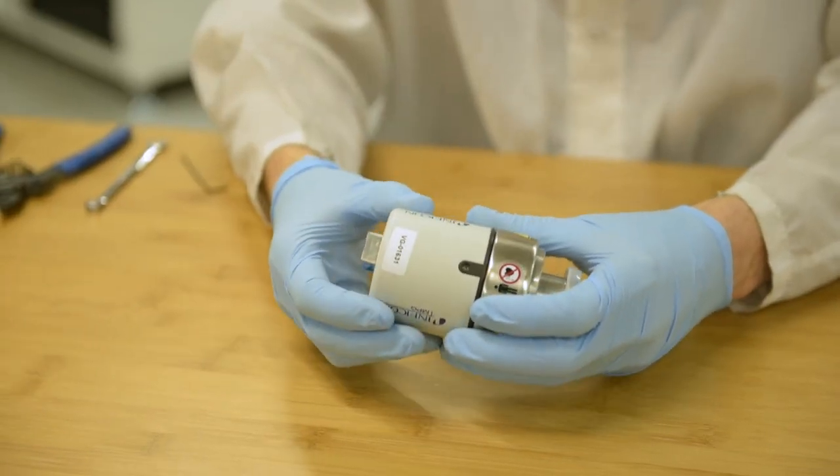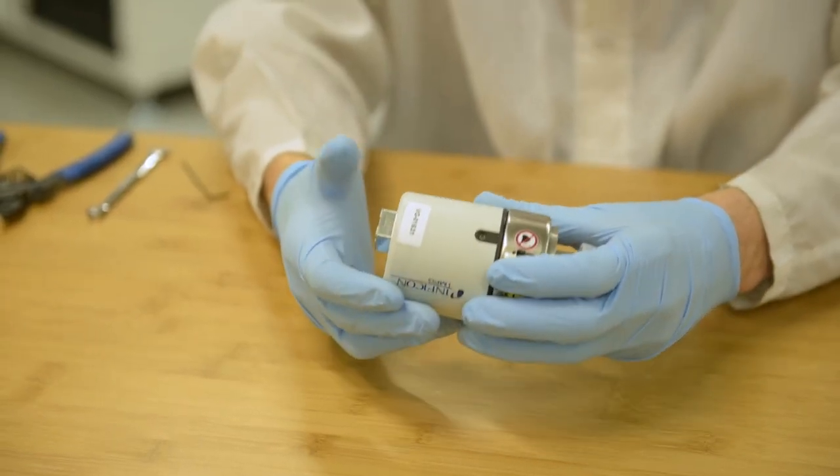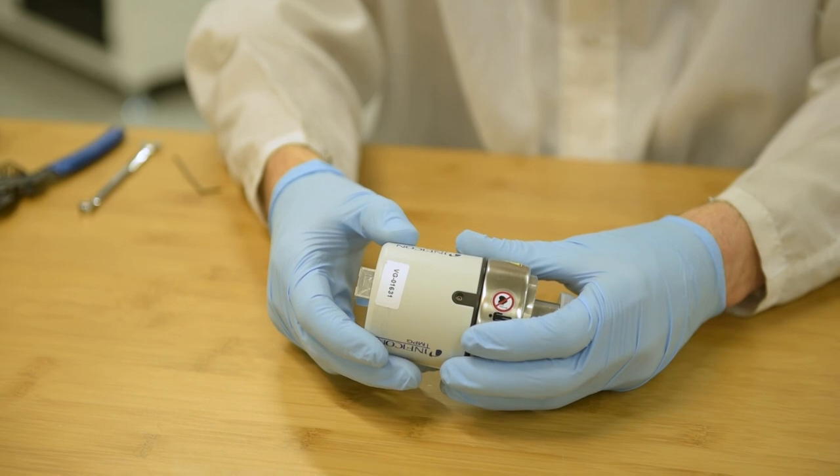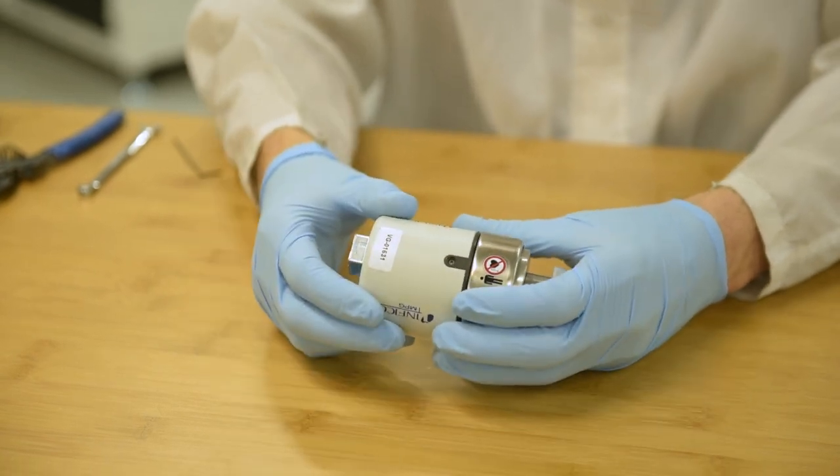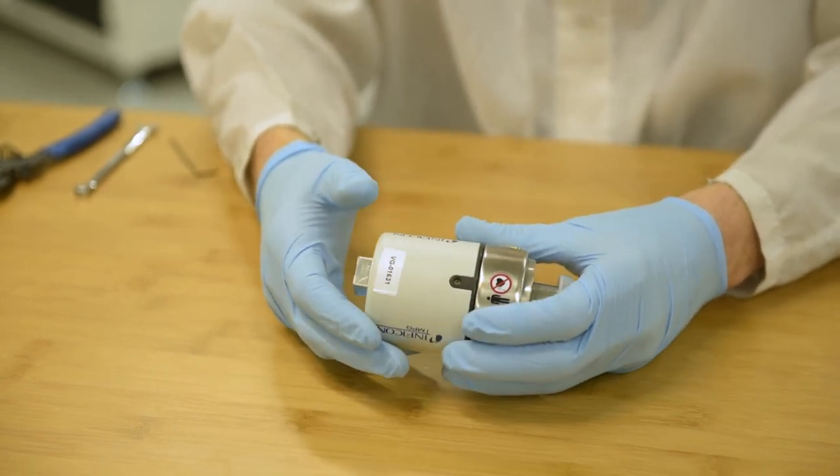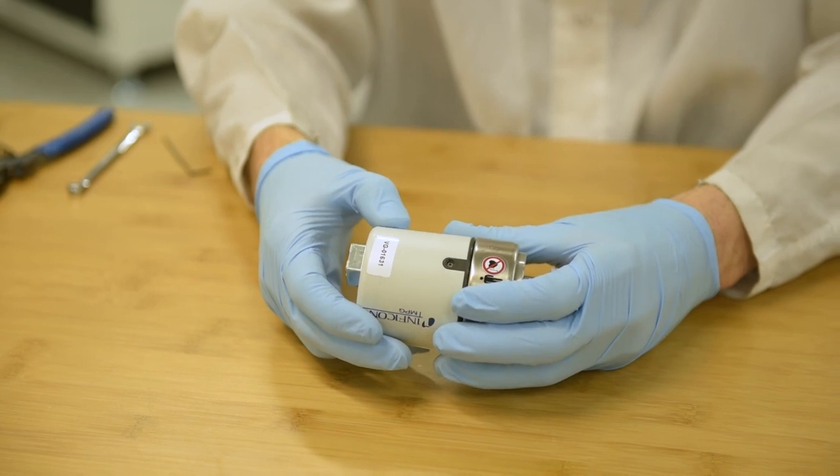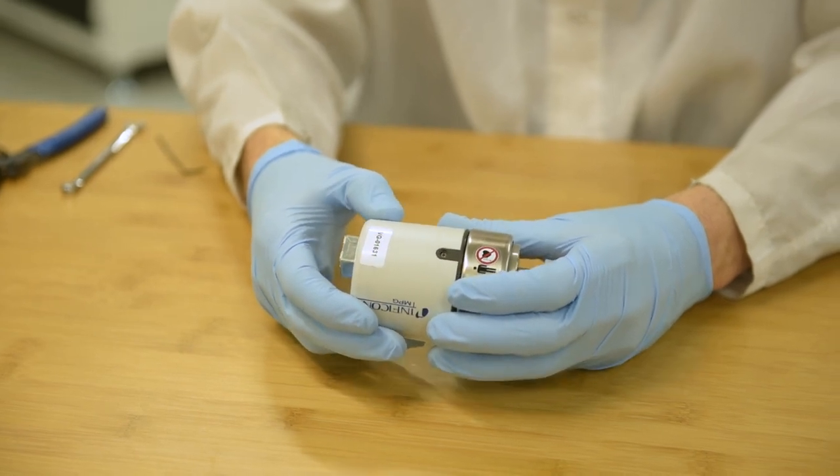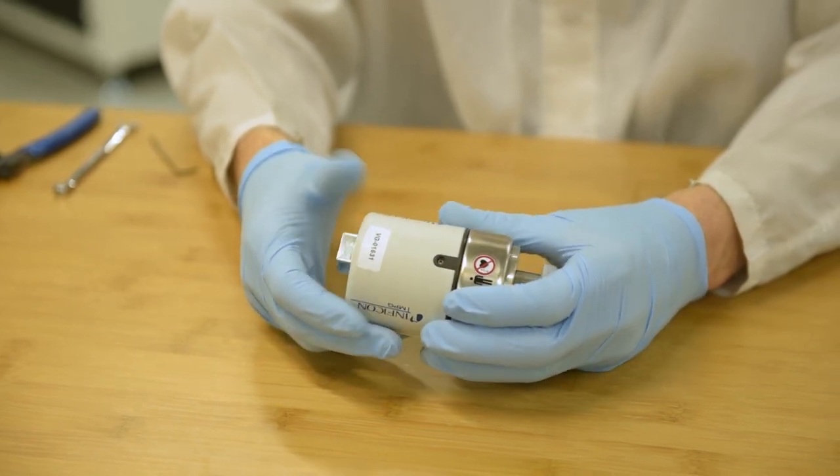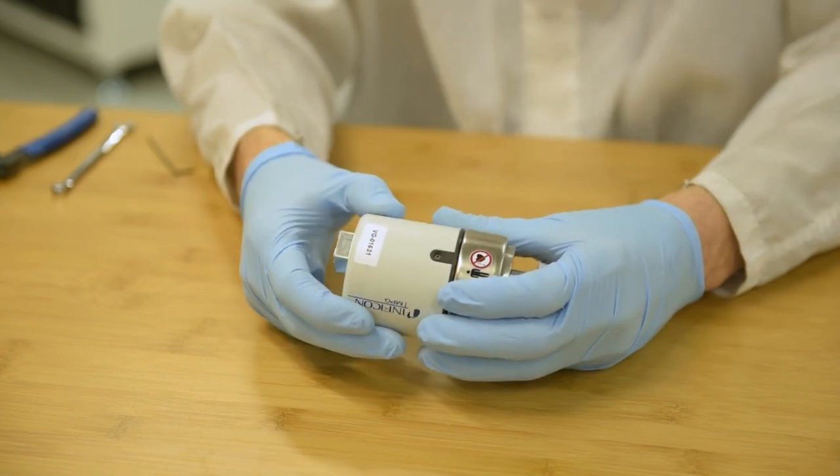This style of gauge is very popular because you can field service it, so you don't have to send it back or send it for repair. You can clean it and most customers can restore the functionality of the gauge simply by taking it apart, cleaning it and putting it back together.